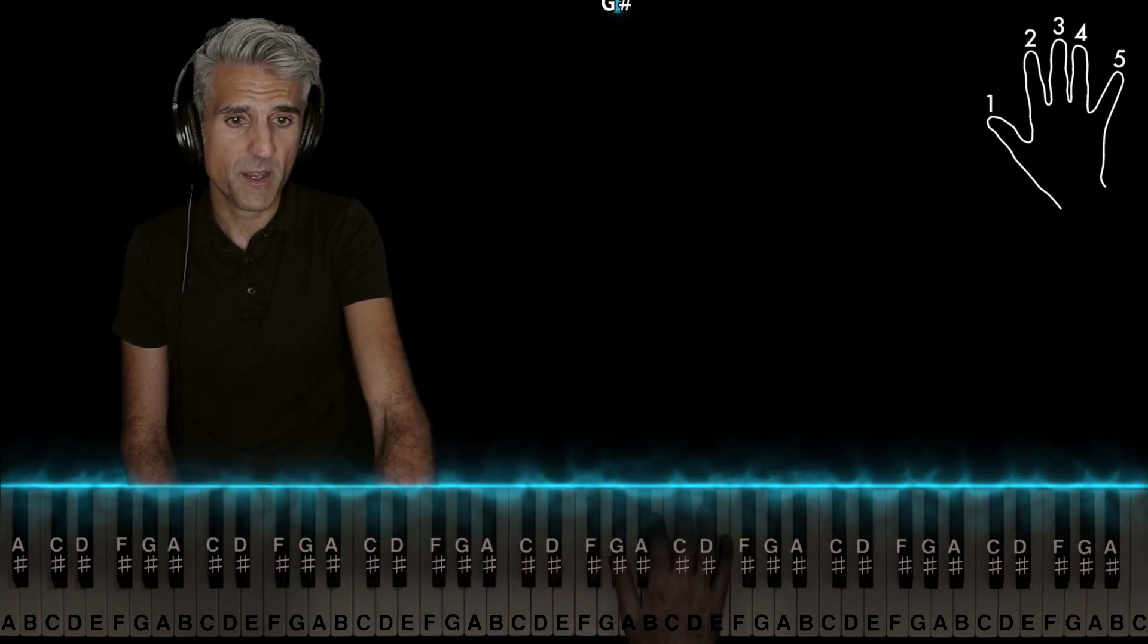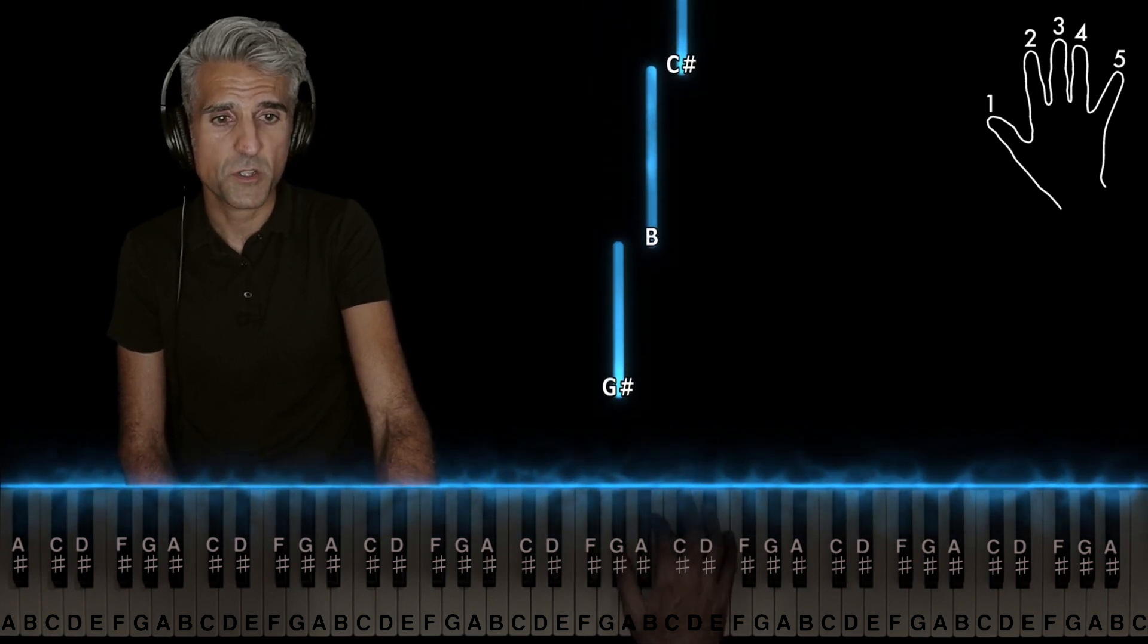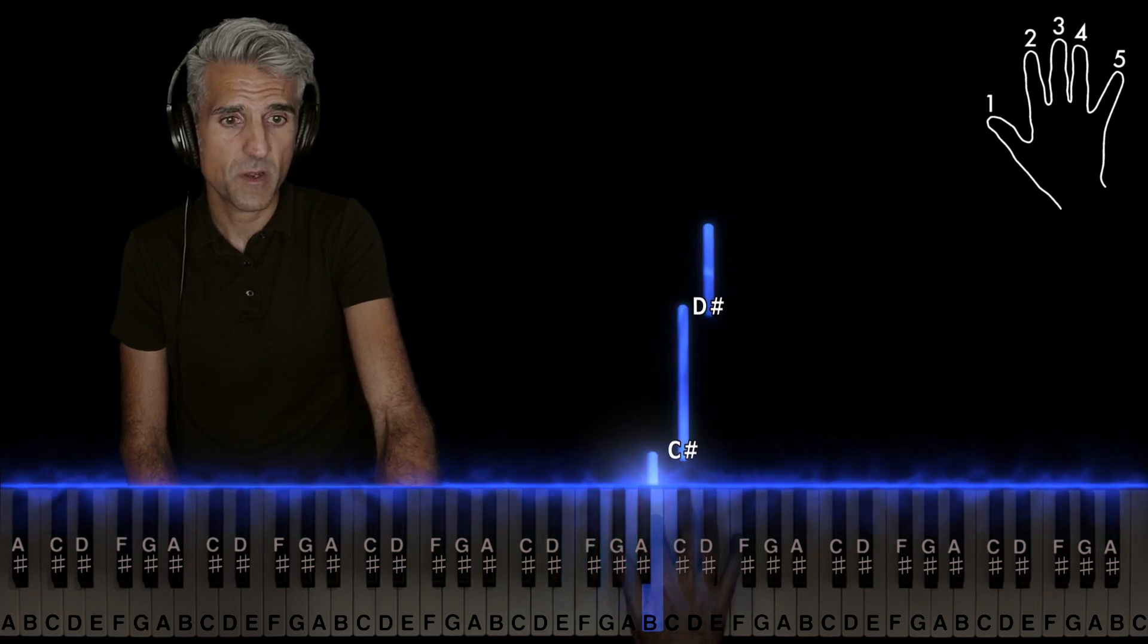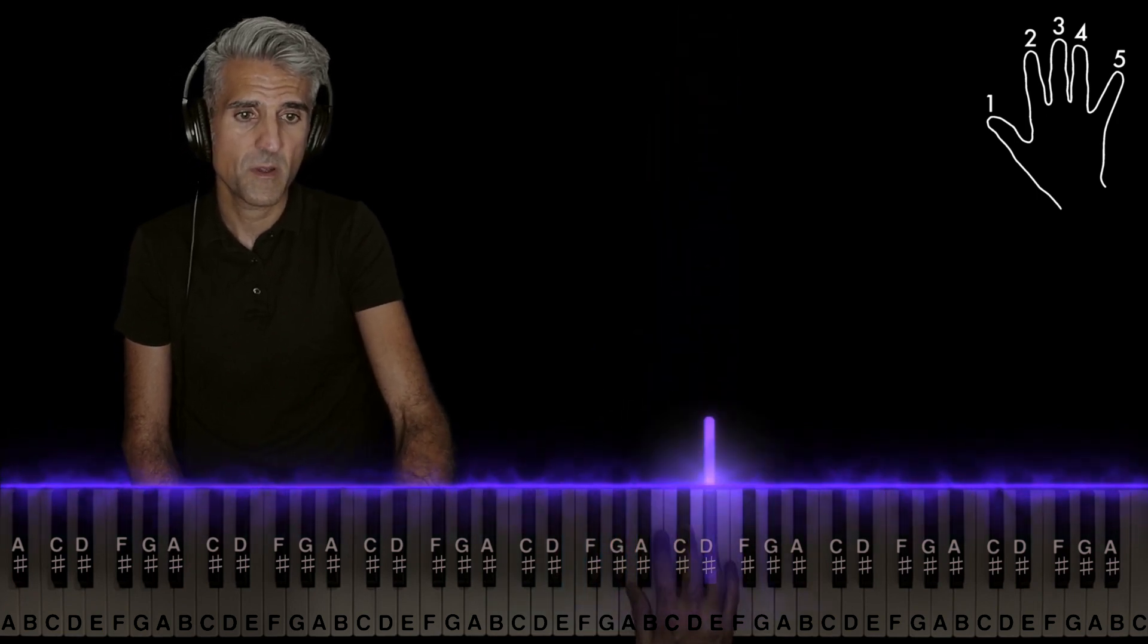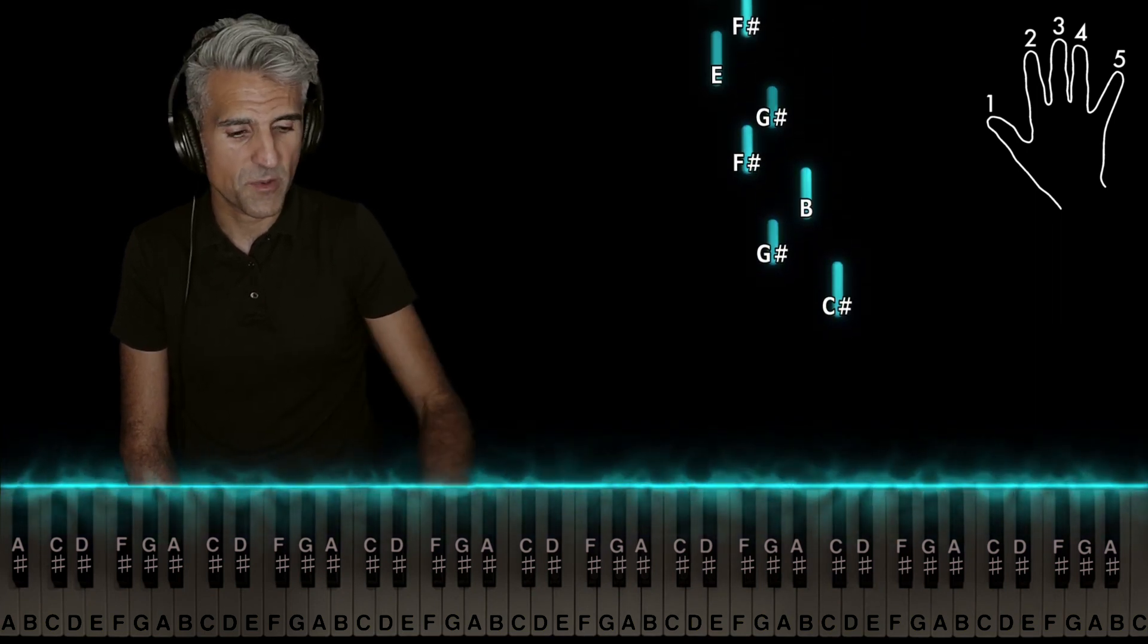Then jump up higher. Remember your left hand is going to be crossing over your right hand at this part: one on G sharp, two on B, three on C sharp, four on D sharp. And then it'll start all over. Let me show you that right hand one more time without stopping.